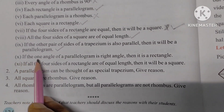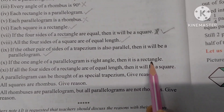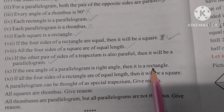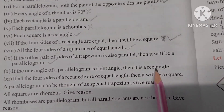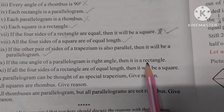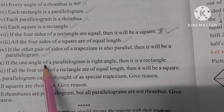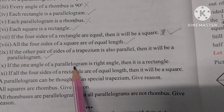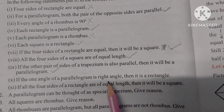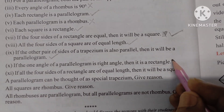Number 10: If one angle of a parallelogram is a right angle, then it is a rectangle. We know that in a rectangle, opposite sides are parallel and equal, and each angle is 90 degrees. If one angle of a parallelogram is 90 degrees, then it will be a rectangle. So this statement is correct.